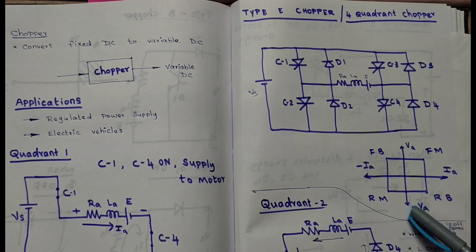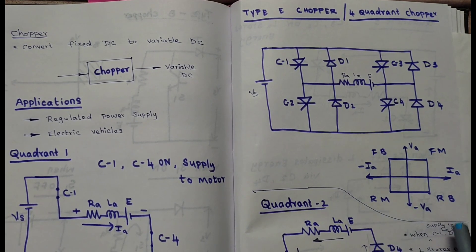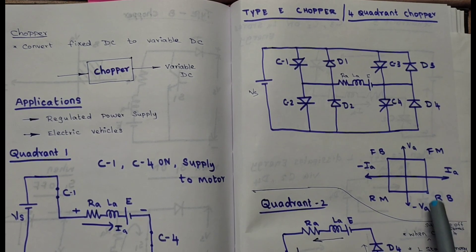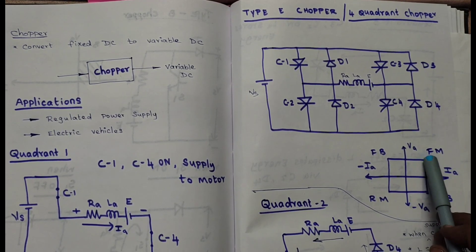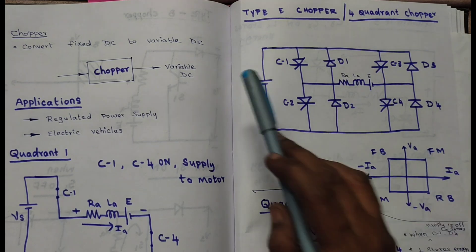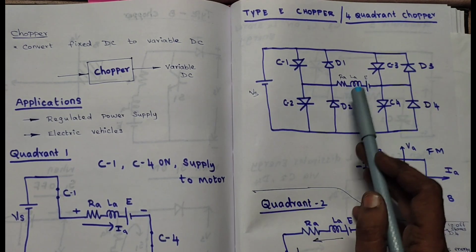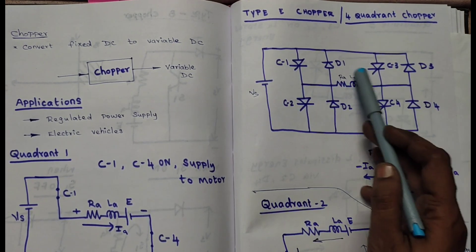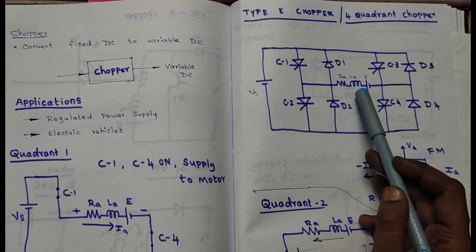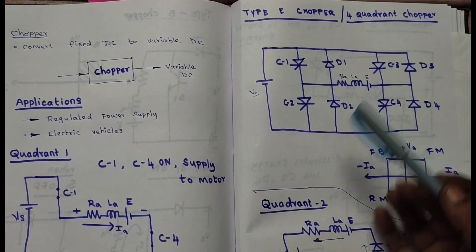This is the 4-quadrant operation we are going to perform in the circuit. For the first quadrant, it is forward motoring. Motoring means energy flows from the supply to the motor — otherwise we can call the motor as load. From supply to motor means it is motoring.